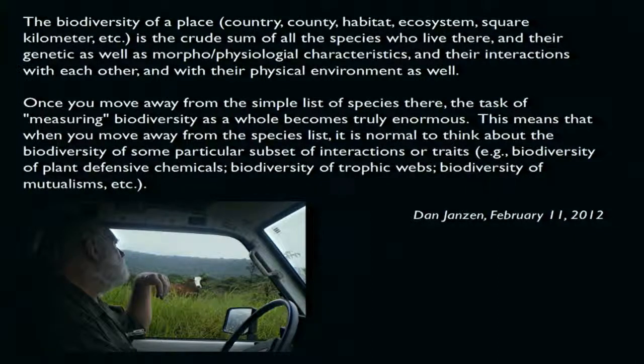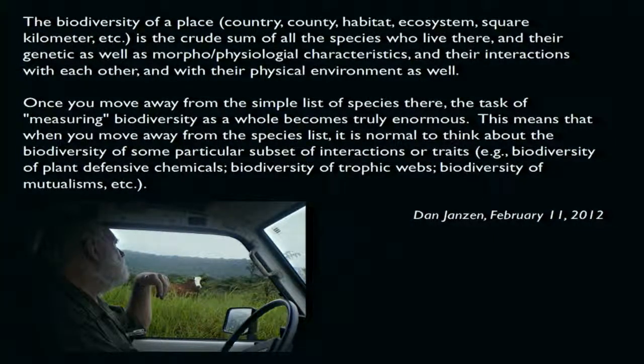The biodiversity of a place — country, county, habitat, ecosystem, or a square kilometer — is the crude sum of all the species who live there, and their genetic as well as morphological and physiological characteristics and their interactions with each other and with their physical environment. Once you move away from the simple list of species, the task of measuring biodiversity as a whole becomes truly enormous.